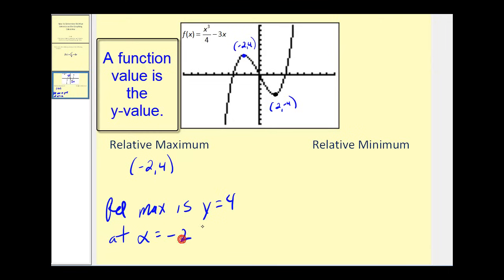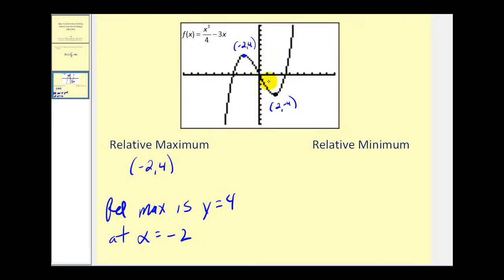Again, the y value is the relative maximum, and the x value is the location. So the relative minimum sometimes is expressed as the point two, negative four, but really the relative minimum is y equals negative four when x equals two. Okay, so that's how you find relative extrema using the graphing calculator. I hope you found this explanation helpful.